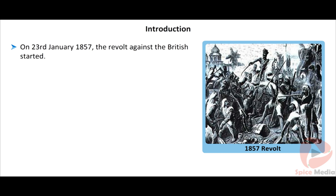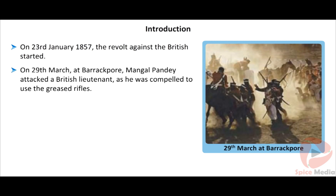At the end of this topic, you will be able to identify the regions where the revolt broke out, list its important leaders, and discuss how the revolt was suppressed by the British. On 23rd January 1857 at Dum Dum, the revolt against the British started.